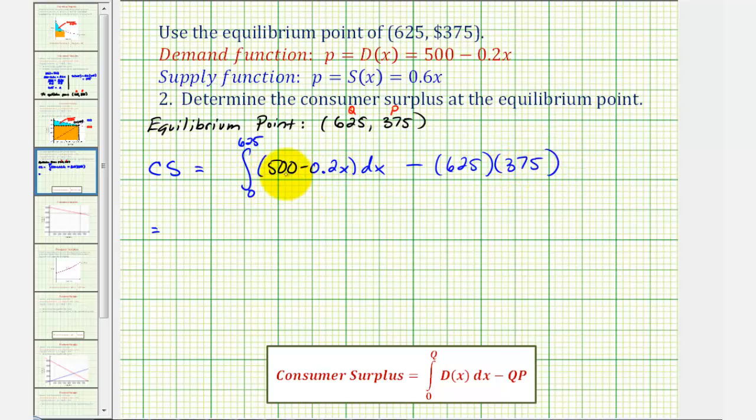So we'll first find the antiderivative of 500 minus 0.2x. That would be 500x minus 0.2 times, this is x to the first. So we'd have x to the second divided by 2. We'll evaluate this at 625 and then 0 and then find the difference. And then subtract this product here, which is 234,375. Notice how here 0.2 times 1 half or divided by 2 would be 0.1.